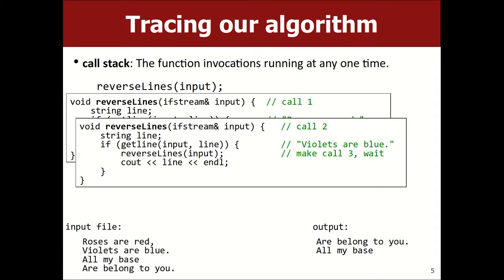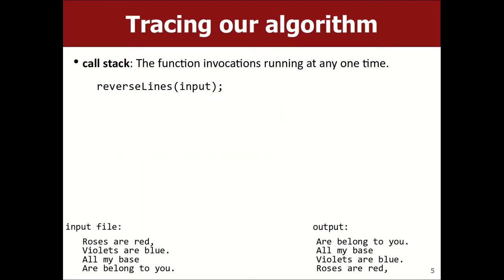It's important to remember that each of those stacked calls has its own copy of local variables. One subtle thing: usually when you make a recursive call, you pass different parameters — n minus one, n over two, et cetera. In this example, we're passing the same file as a parameter, but it's also shrinking because the amount of data left to read is shrinking. When passing something by reference, all calls share that same value, so if one call reads a line, the others have that many fewer lines left to read.